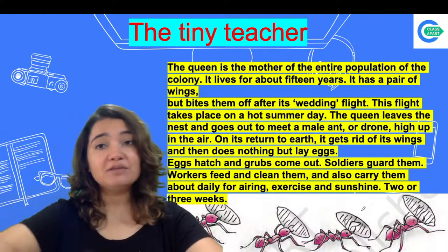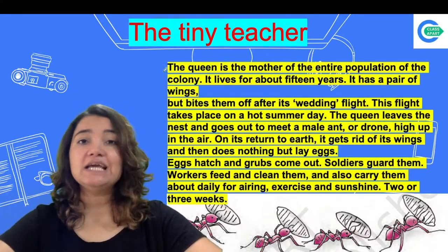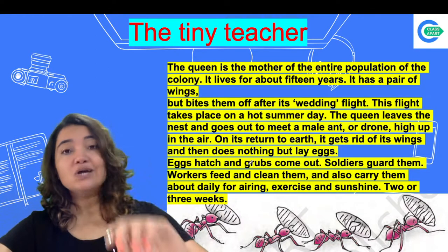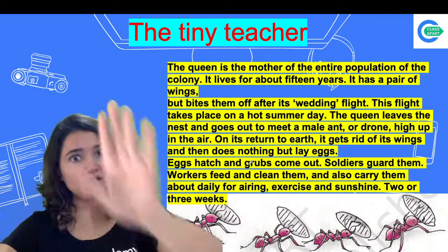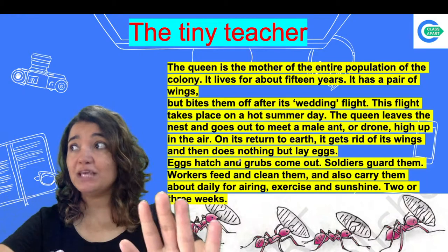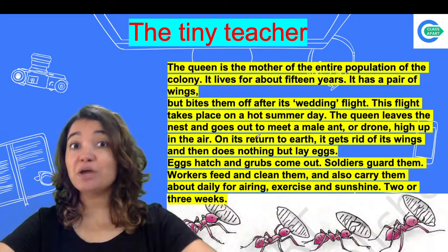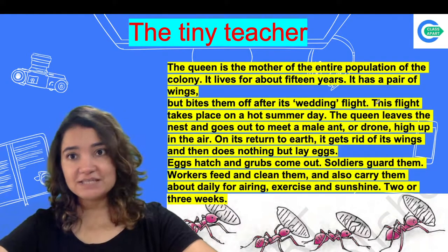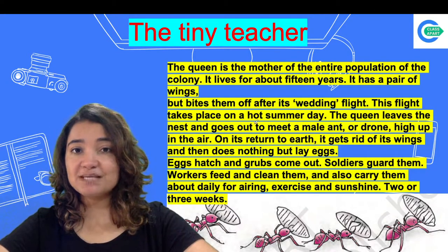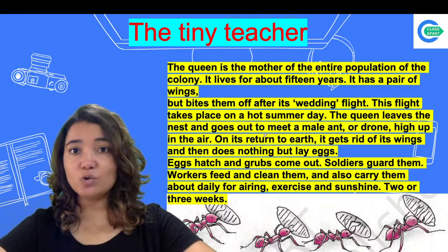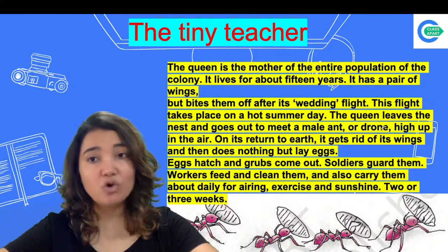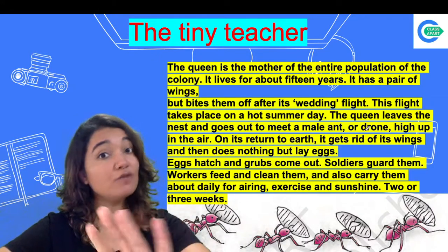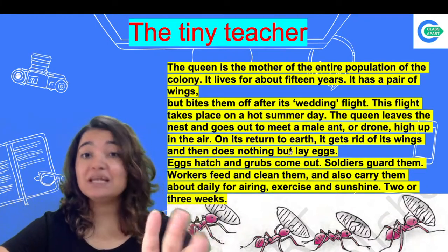The queen is the mother of the entire population of the colony. It lives for about 15 years and has a pair of wings, but bites them off after its wedding flight. The flight takes place on a hot summer day. The queen leaves the nest and goes out to meet a male ant or drone high up in the air. On its return to earth, it gets rid of its wings and then does nothing but lay eggs.